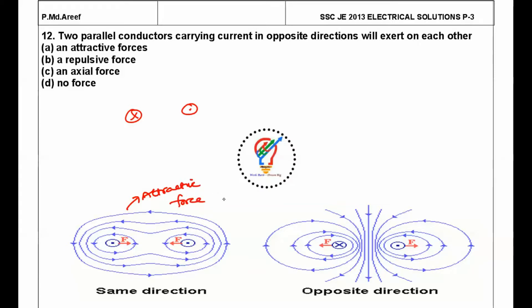Similarly, when the current is carrying in opposite direction, that means one conductor is carrying current in this direction, another conductor is carrying in reverse direction. So it is opposite direction, so here repulsion forces exist between these two. So the answer is B.